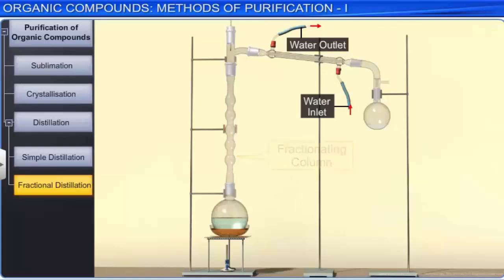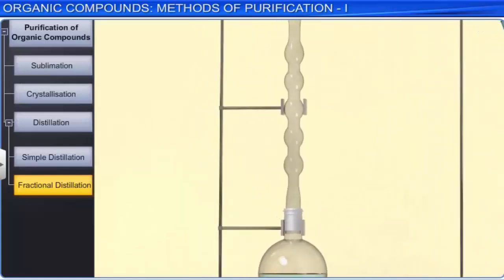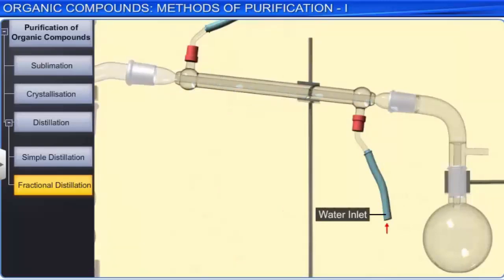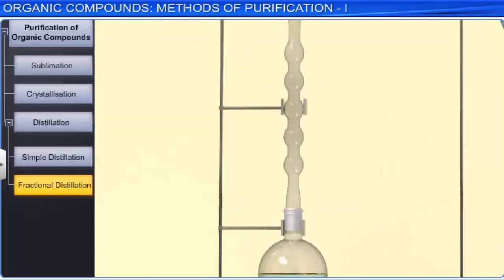The vapors of a liquid mixture are passed through the fractionating column before condensation. As the liquid boils, the more volatile component rises to the top. Some of the condensing liquid obtains heat from the ascending vapors and gets vaporized again, becoming richer in the low boiling component. These vapors rise to the top of the column becoming purer, and the pure vapor is condensed and collected in a receiver. The remaining liquid in the flask becomes rich in the high boiling component after successive distillations. Each successive condensation and vaporization unit in the fractionating column is called a theoretical plate.